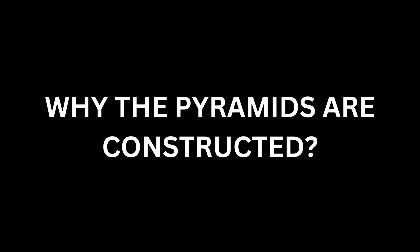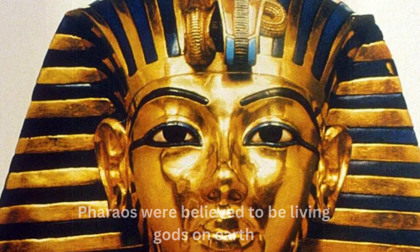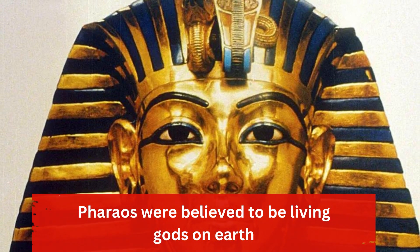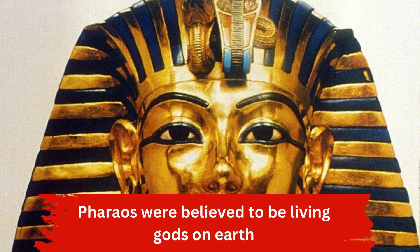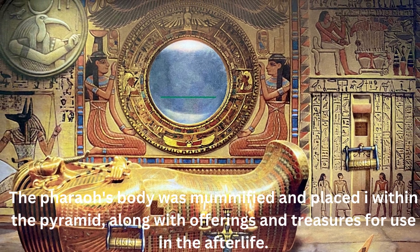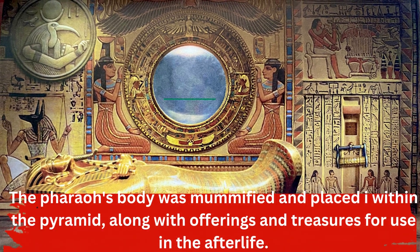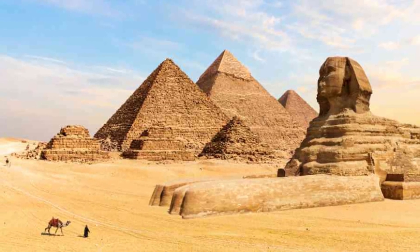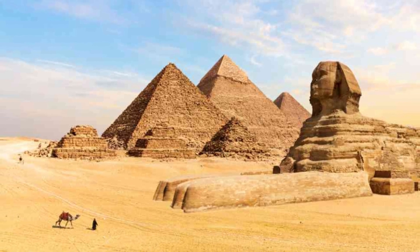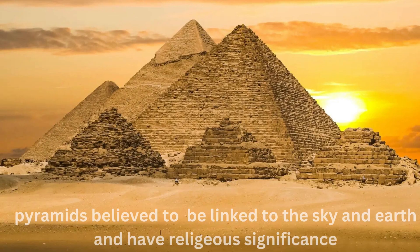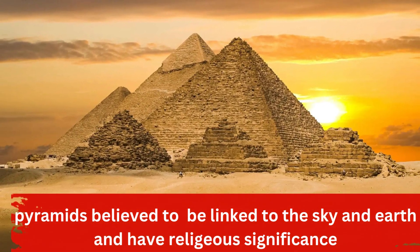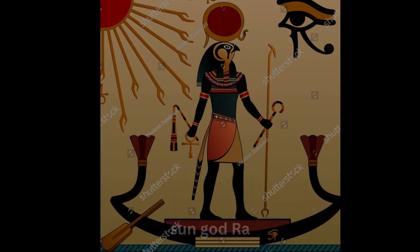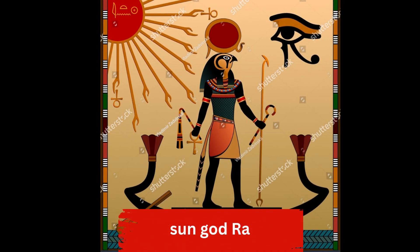The construction of pyramids in ancient Egypt served several purposes, both practical and symbolic. Pyramids were built as monumental tombs for the pharaohs, who were believed to be living gods on earth. The pharaoh's body was mummified and placed in a sarcophagus within the pyramid, along with offerings and treasures for use in the afterlife. Pyramids also served as powerful symbols of the pharaoh's authority and the stability of the Egyptian state, and were believed to be a link between the earth and the sky. They were associated with the sun god Ra, who was believed to ascend and descend the pyramid's sloping sides each day, as well as with the pharaoh's journey to the afterlife.